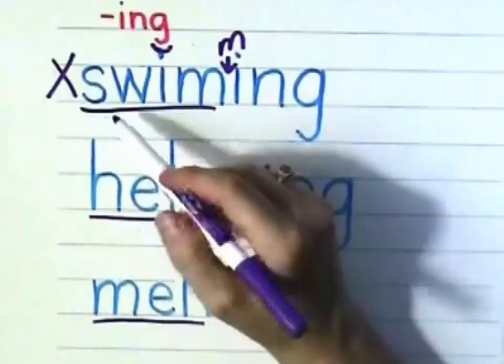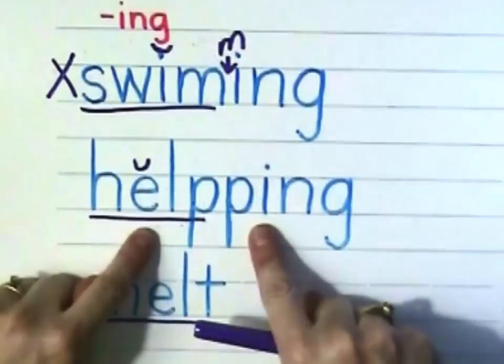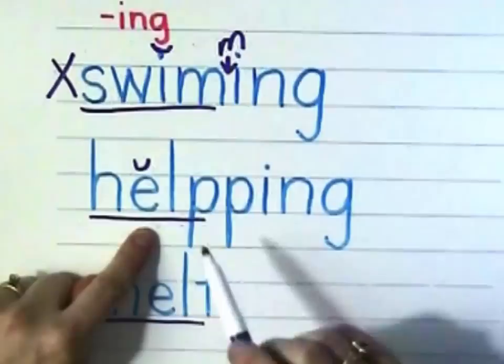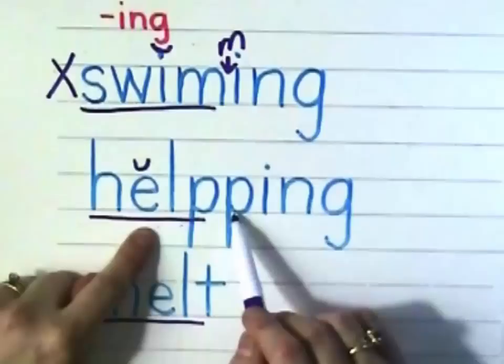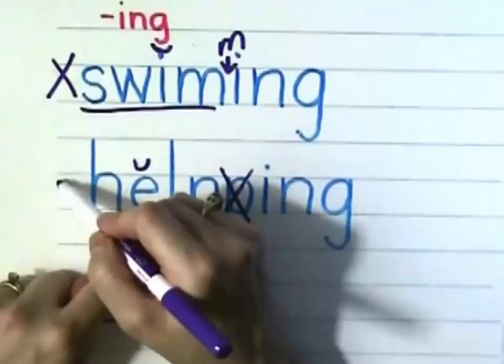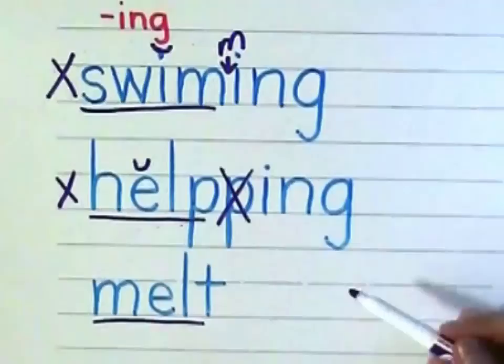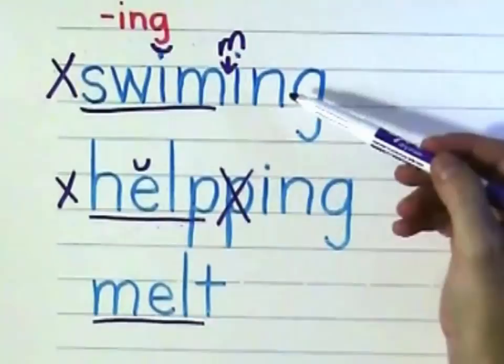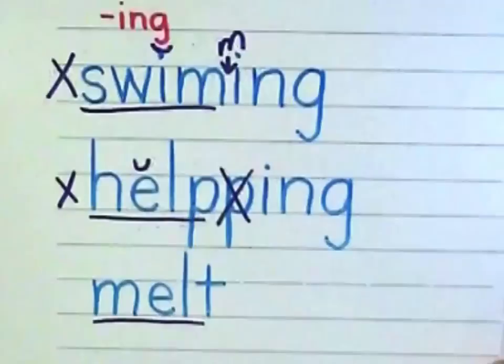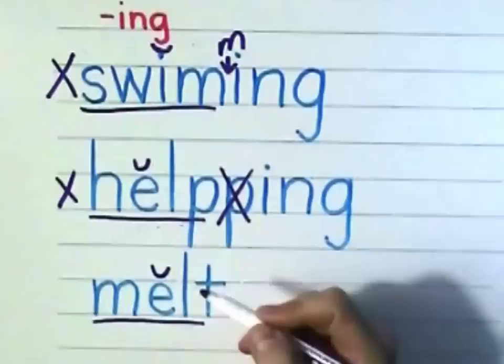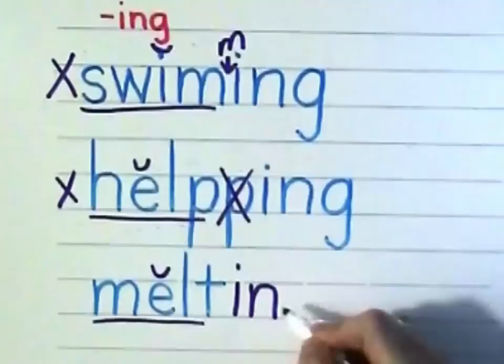What about "helping?" Well, here's our short E. How many consonants are between this E and the suffix vowel I? One, two, three. Is that how many we need? No, we need two. So this extra P should not have been put in there — this word is also wrong. Now, pause the video and write "melt" on your paper and add ING correctly. There's the E. How many consonants come after that? One, two — so we do not need to add another T. We can just go ahead and add ING: "melting."